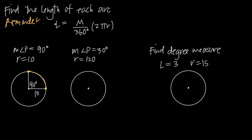We're interested in the length of this arc right here. In order to find the length, we're just going to plug the values we've been given into this formula. So we're going to say the length L is equal to the interior angle measure, which is 90 degrees, so we get 90 degrees over 360 degrees multiplied by 2πr. And in this case, r is 10 — we've been told that the radius is 10.